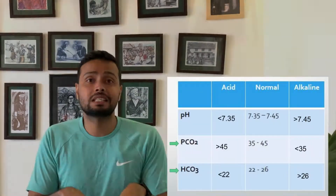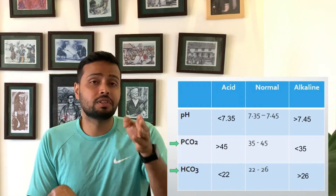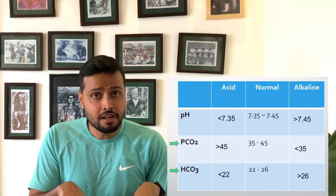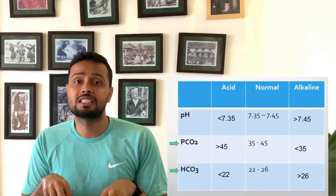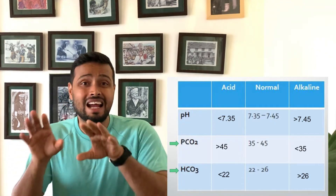In ABG analysis, we consider pH as the father of the family — whichever side the father decides to go, the whole family follows. The normal value for pH is 7.35 to 7.45. If the value goes below 7.35, it is considered an acidotic condition, and if it goes above 7.45, it is considered an alkalosis condition.